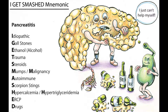M is for mumps and M is for malignancy. Regarding mumps, the mumps virus can cause pancreatitis, as well as cytomegalovirus and Coxsackie virus, which are all known to cause pancreatitis. And pancreatic malignancy, as we know, has a very poor prognosis.